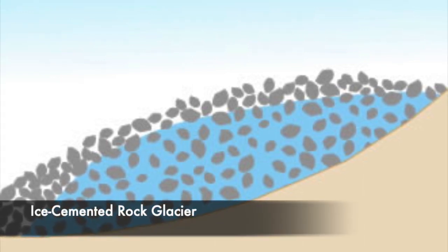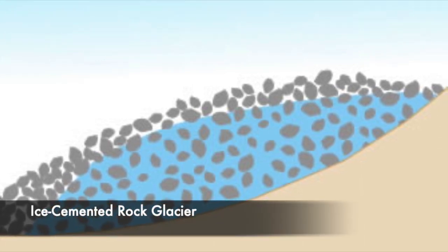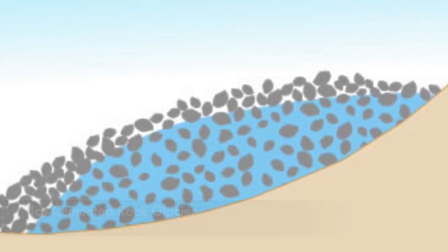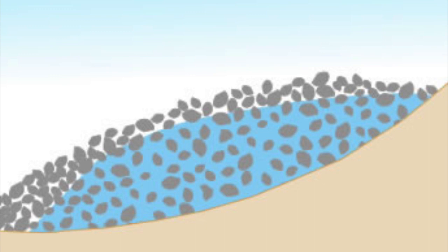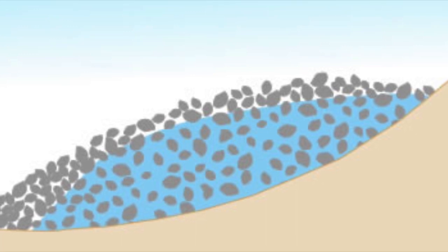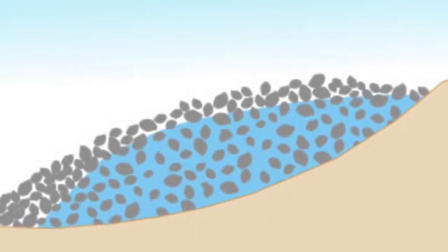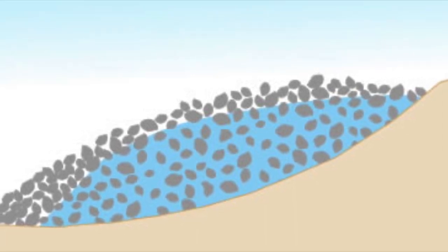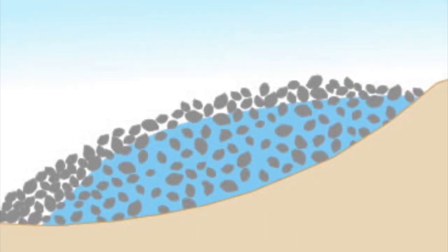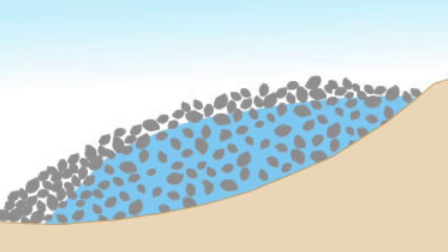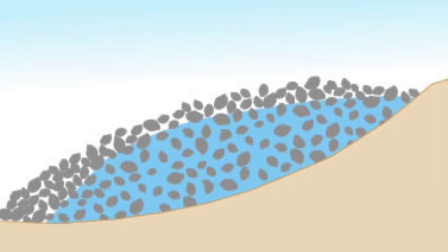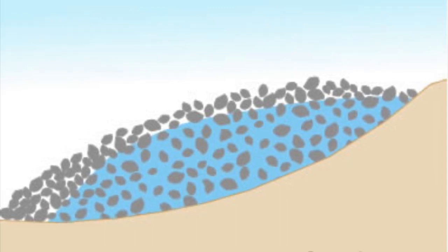This illustration shows an ice-cemented rock glacier. When ice and snow melt on the surface, the water infiltrates down through the rocks, then freezes at depth. This results in a mass of rocks that then get cemented by the ice.